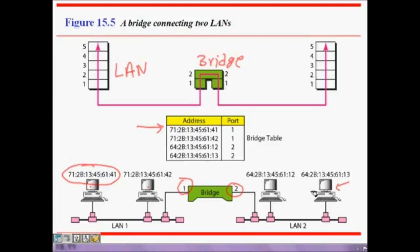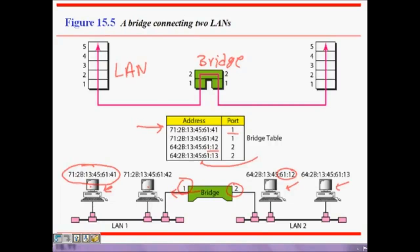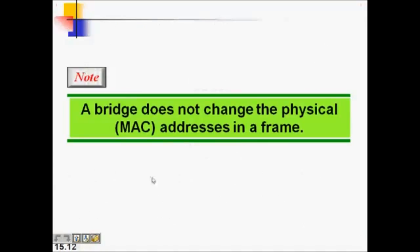For example, if a machine in LAN 2 sends a frame to the machine with MAC address 71:2B:13:45:61:41, the bridge looks it up and sees that address is on port 1, so it forwards to port 1. If the destination is 61:12 in the same LAN 2, it finds it on port 2 and forwards there, so it does not go out to LAN 1 and cause unnecessary collision.